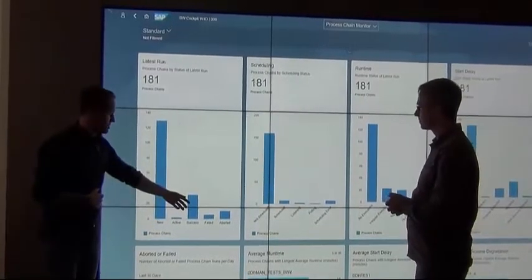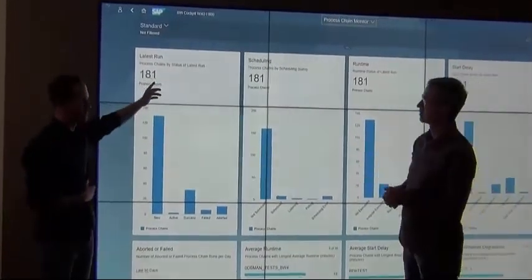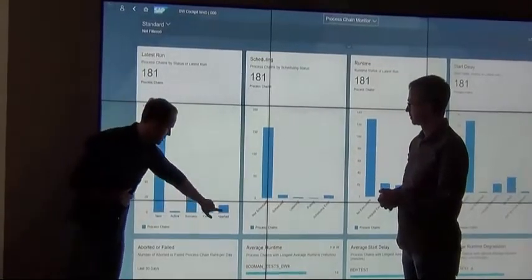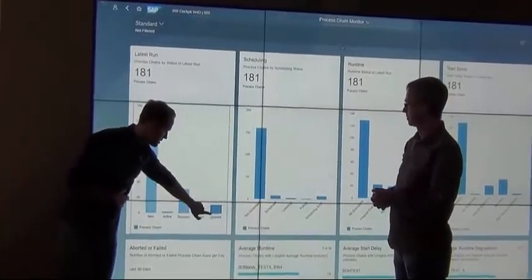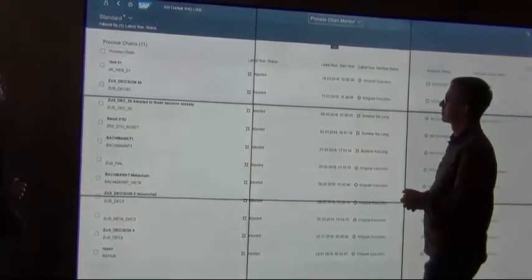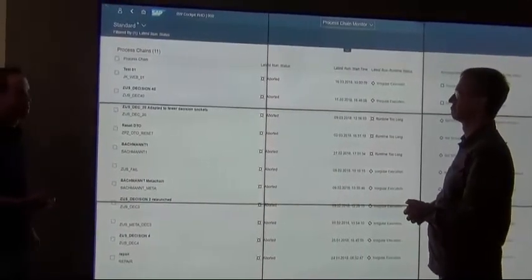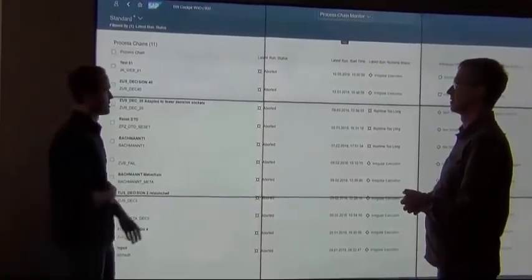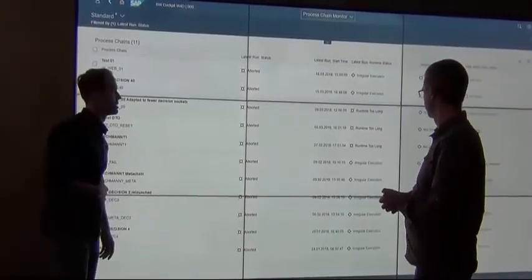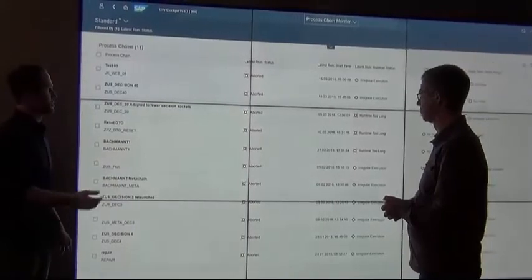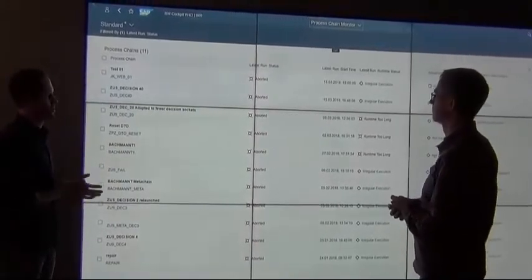And then you can get the aborted graph. And what you then basically get is a list of pre-filtered process chains, which all have the status like aborted or failed. So you immediately know which chains aborted in the last run. Excellent.